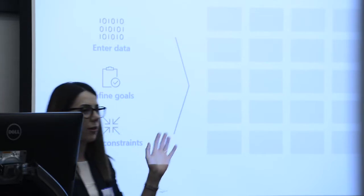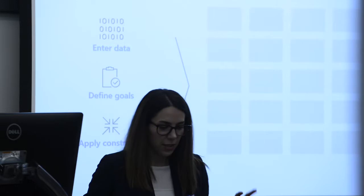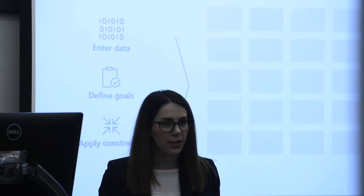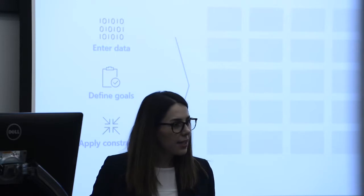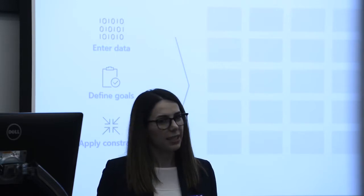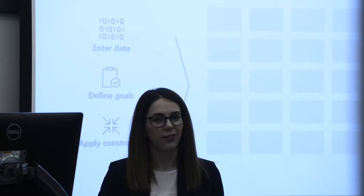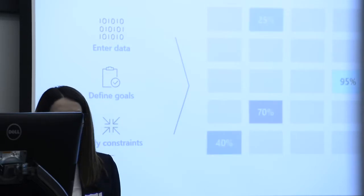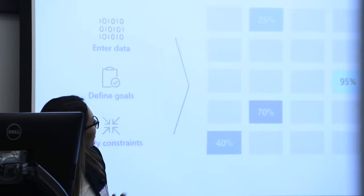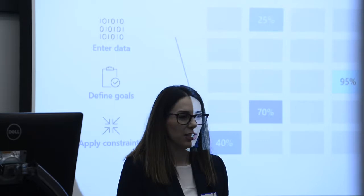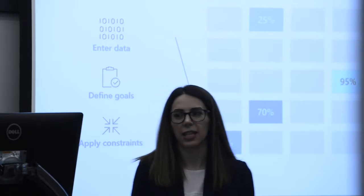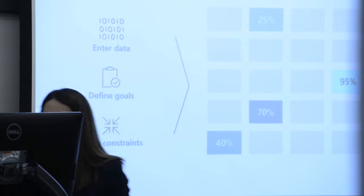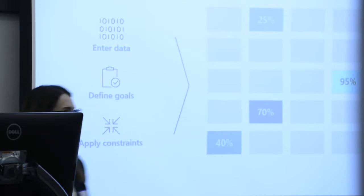There are other parameters you can set — you can even specify a whitelist or blacklist of model types to consider or avoid. Those goals are really easy; you don't need deep knowledge of machine learning. You input your data and automation takes care of data preparation, feature engineering, algorithm selection, and hyperparameter tuning, and gives you an accurate model based on the goals you set.